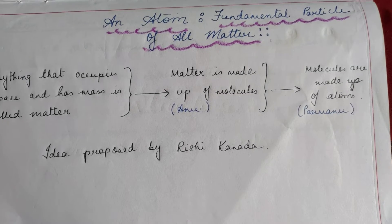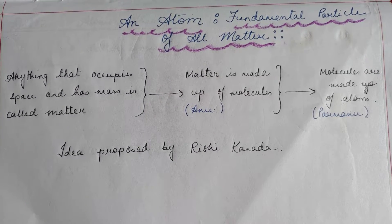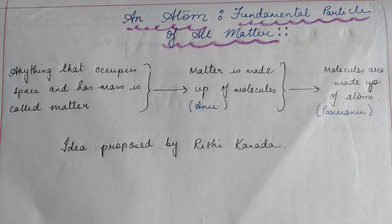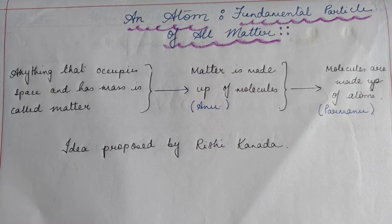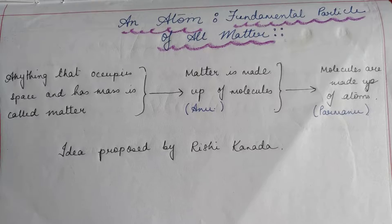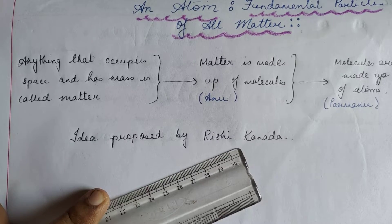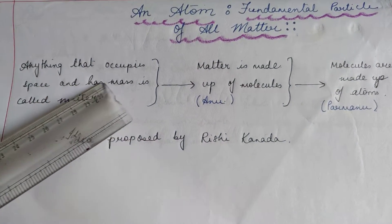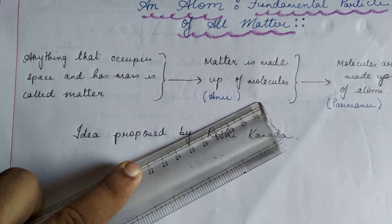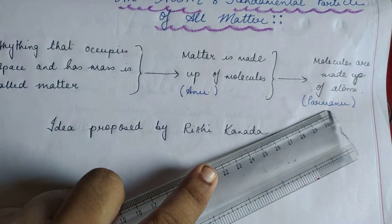Before we can start understanding the atoms and how the structure was devised, it is a must that we understand that every particle, everything that is made, every matter that we are surrounded with, or rather we ourselves, is made up of atoms. The very first idea about atoms was proposed by Rishi Kannada and he was of the origin of India. What he said was anything that occupies space and has mass is called matter, and what is matter made up of? It is made up of molecules which he called Anu, and the molecules are made up of atoms called Parmanu.